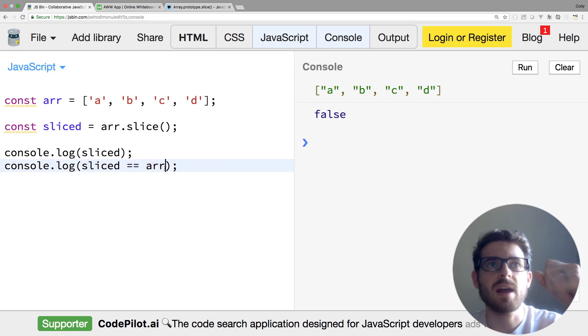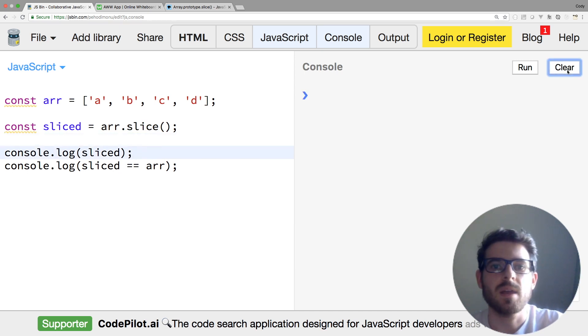This just drives home the idea that slice is going to return a shallow copy. Let's move on to a couple more examples.